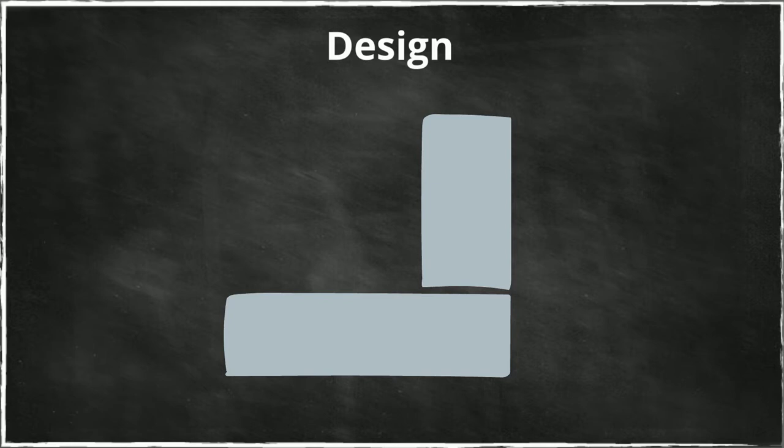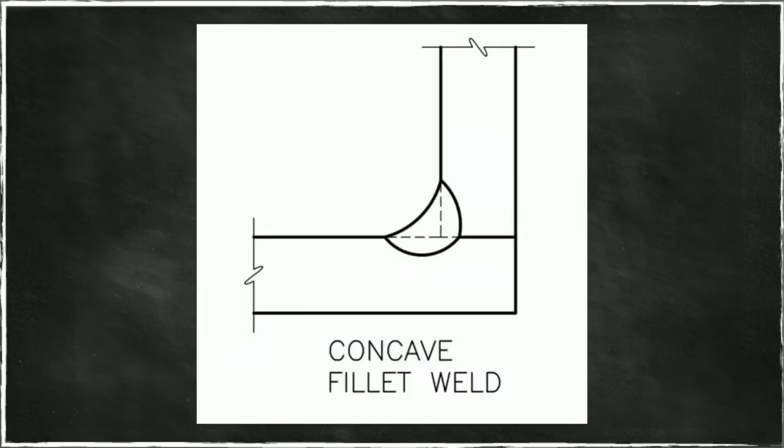I'm going to talk about design. How do we design fillet welds for structural steel? The weld connects two perpendicular pieces of structural steel. There may be some variation in fillet welds. For example, the exposed surface may be concave or convex.